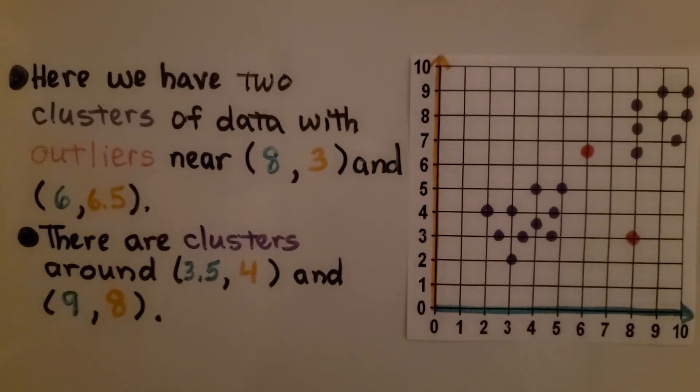So remember, a cluster is a group of closely grouped data, and an outlier is a data point that's very different from the rest of the data in the set.